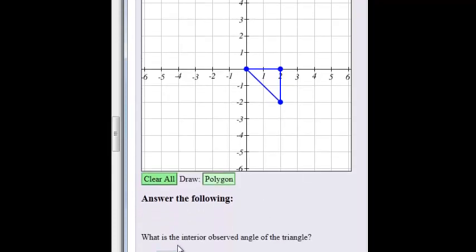The first question now asks us, what is the interior observed angle of the triangle? So there's the interior angle of this triangle. So it's a right triangle and all we want to know is what is this angle inside of that triangle.